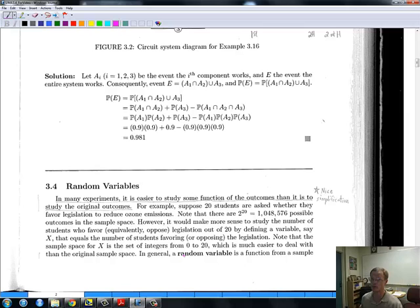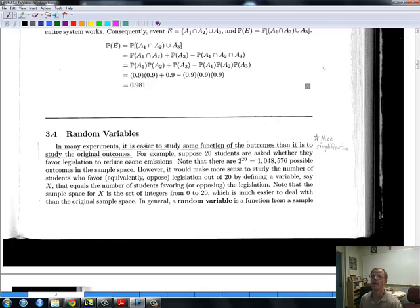So random variables. This is a fundamental concept that we're going to use for the rest of the course and all of next semester in statistics. So I want to just put in some big picture remarks. I think the stuff in the book is pretty understandable. It says right here in many experiments, it's easier to study some function of the outcomes than it is to study the original outcomes. That's true. But let's try to get at what's going on here.